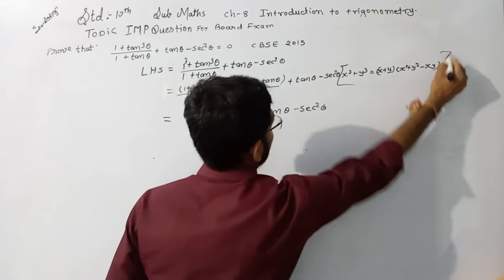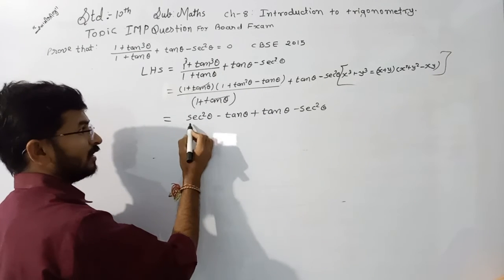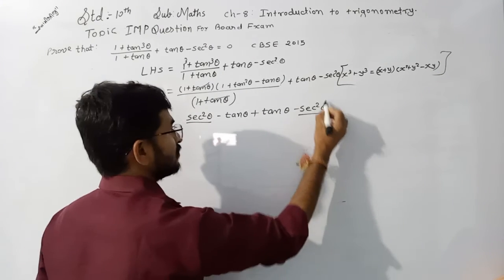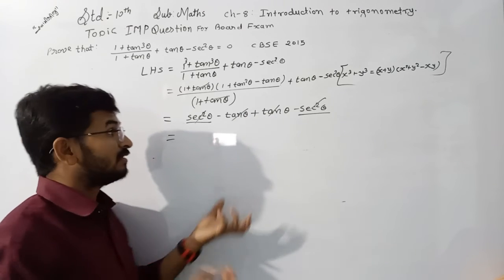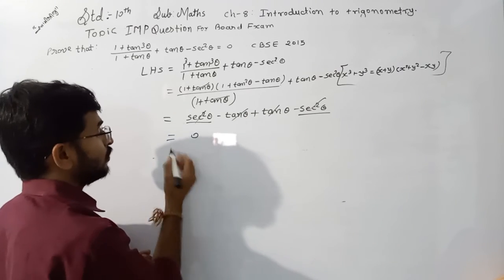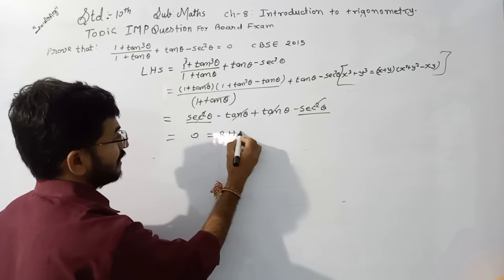Now look here: sec square theta minus sec square theta, both are cancelled out. Minus tan theta plus tan theta, both are cancelled out. No term remains, so we write this is equal to 0, which equals the right hand side.